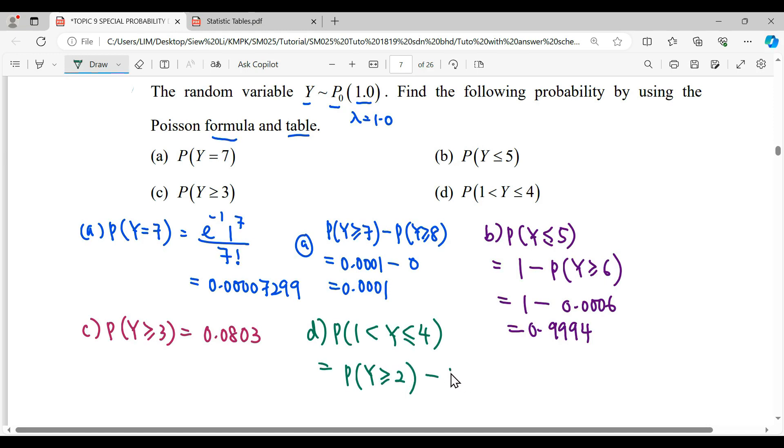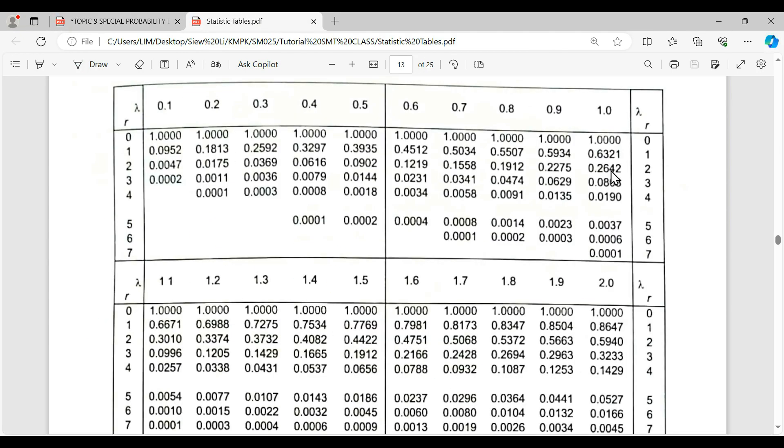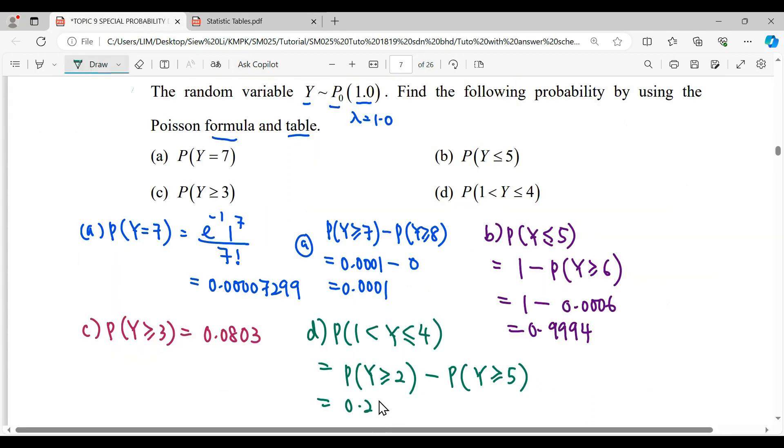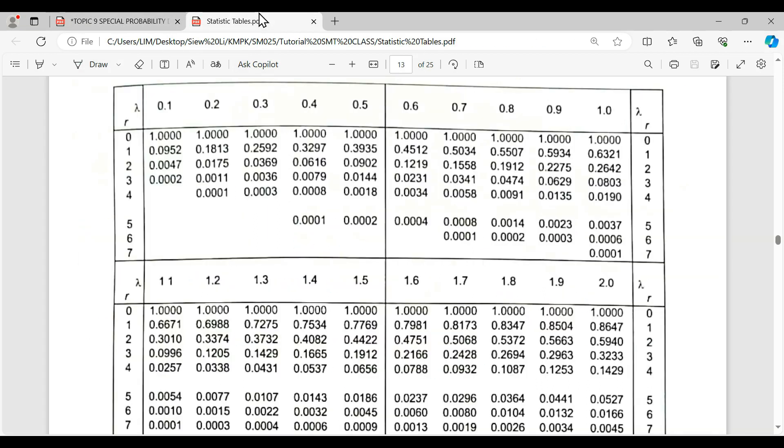We will read what we want and minus what we don't want. More than or equal to 2 until the value of 4, where 4 is included. The value of random variable after 4, which is 5, we are not included, so we minus it off. The reading of 2 is 0.2642, minus the reading of 5, which is 0.0037. Simplified, this is 0.2605.